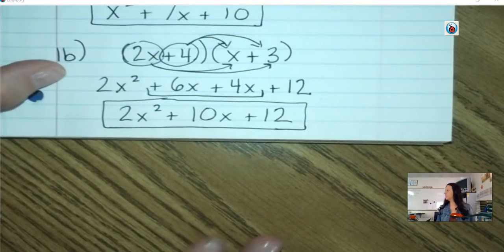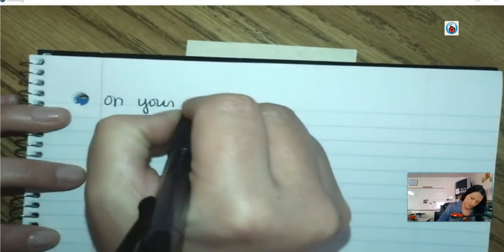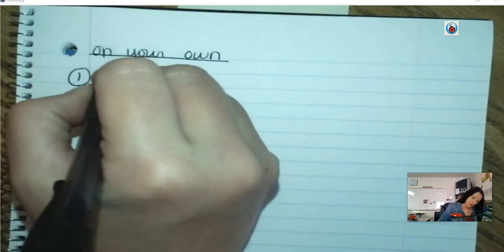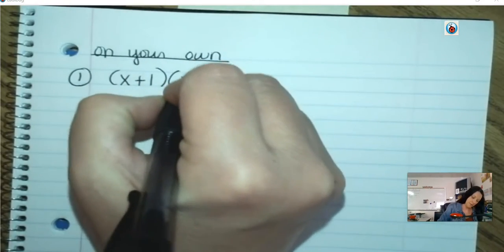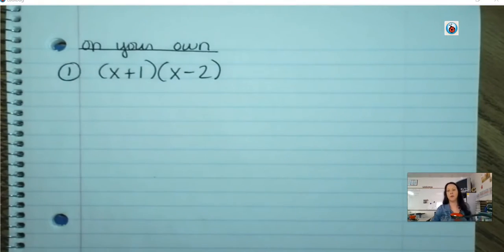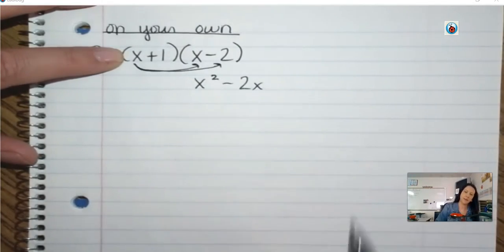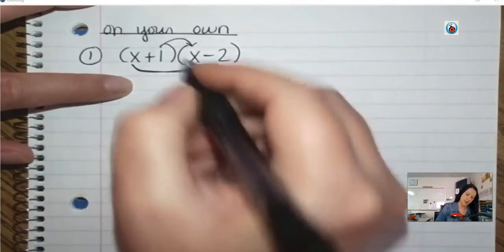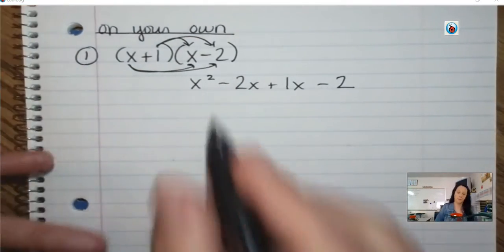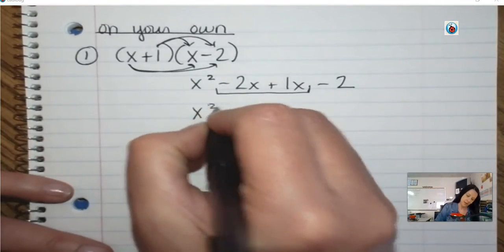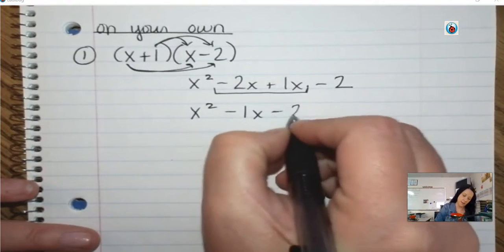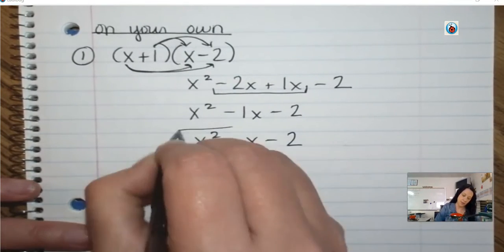Okay, questions on these two so far before you do some by yourself? I'm going to have two that you're going to do on your own. x plus 1 times x minus 2 — go ahead and multiply those binomials. x times x is x squared. x times negative 2 is negative 2x. 1 times x is x. 1 times negative 2 is negative 2. Combine the like terms: negative 2 and a positive 1 make negative 1x. So x squared minus x minus 2 is the final answer.